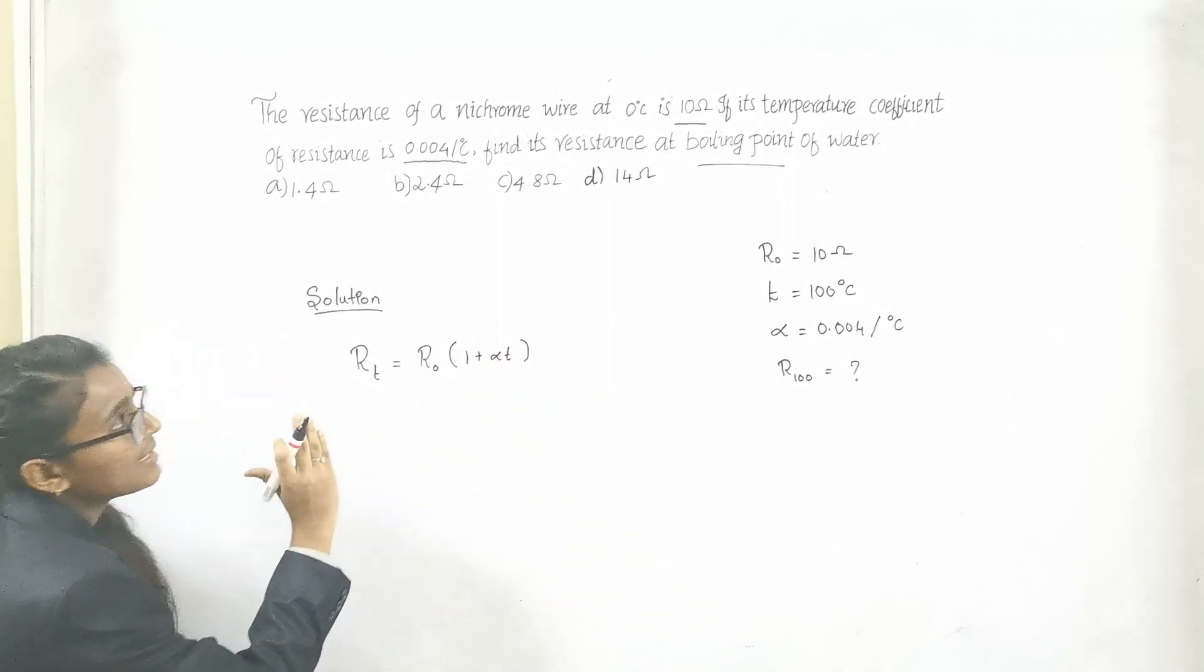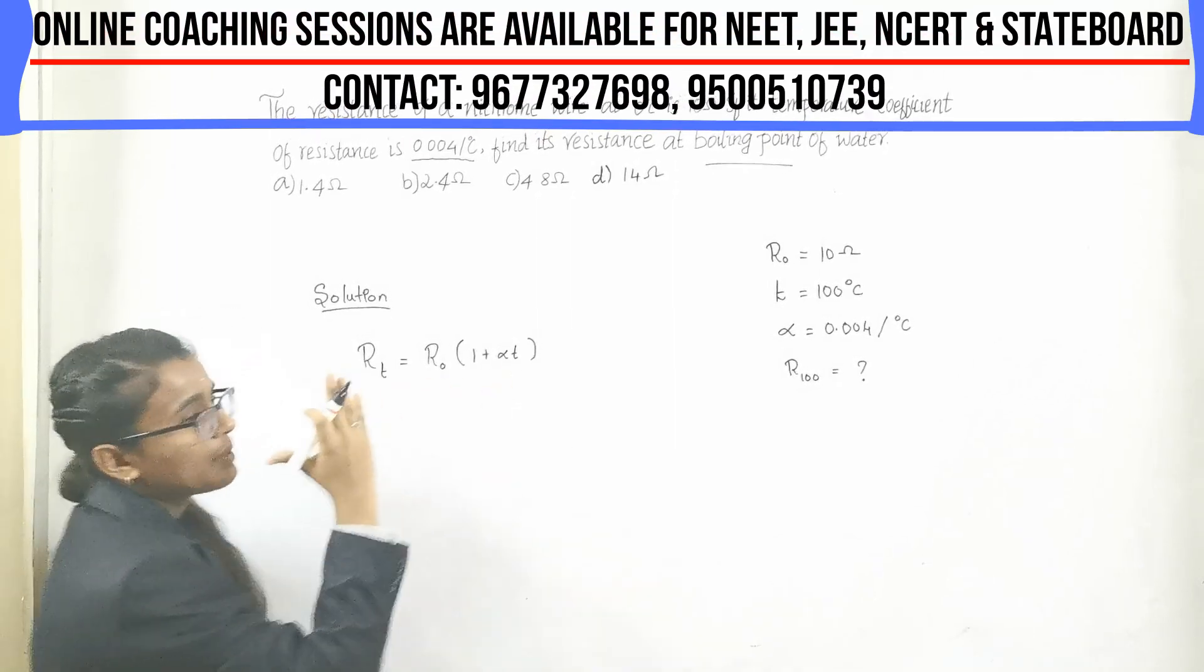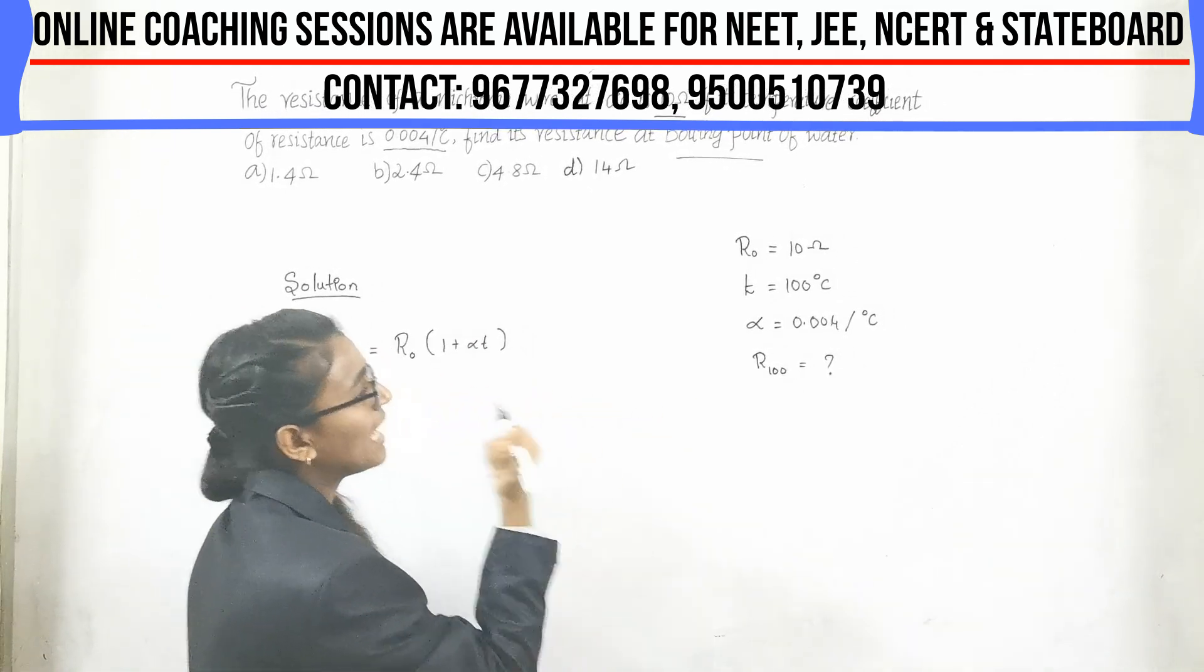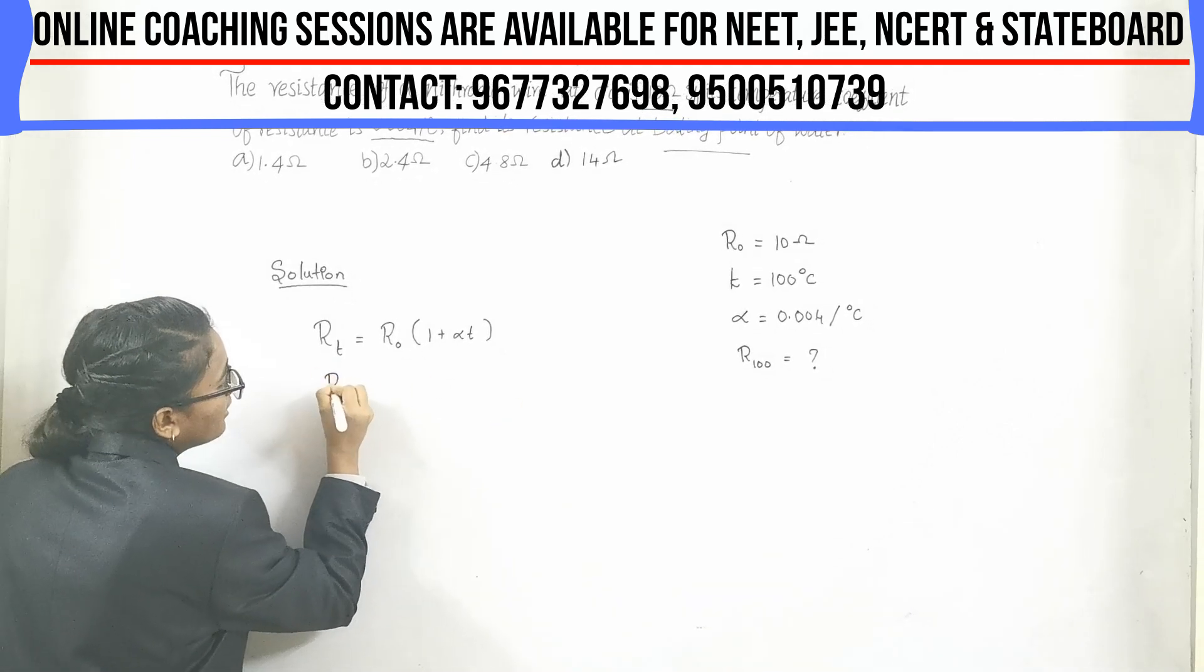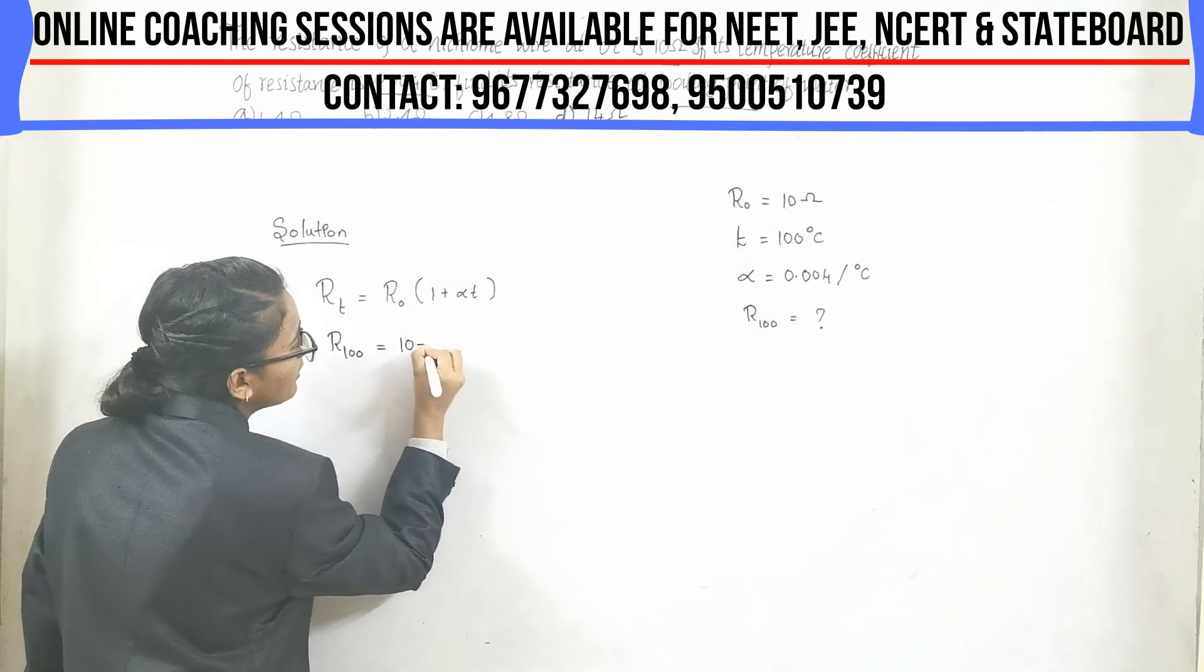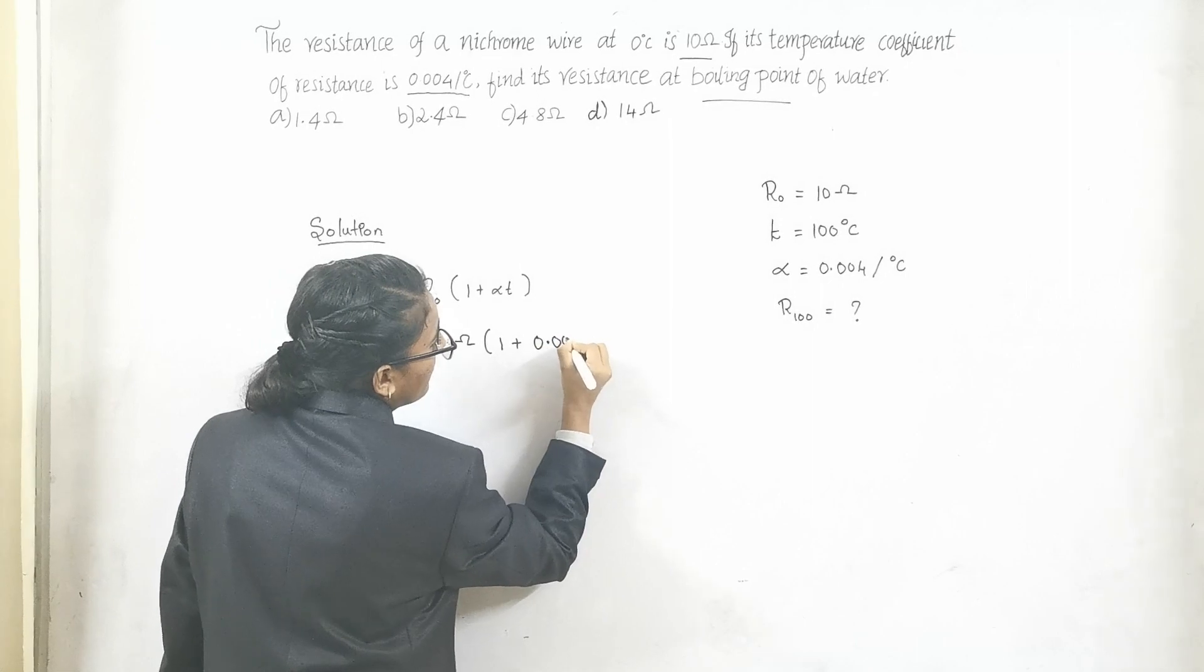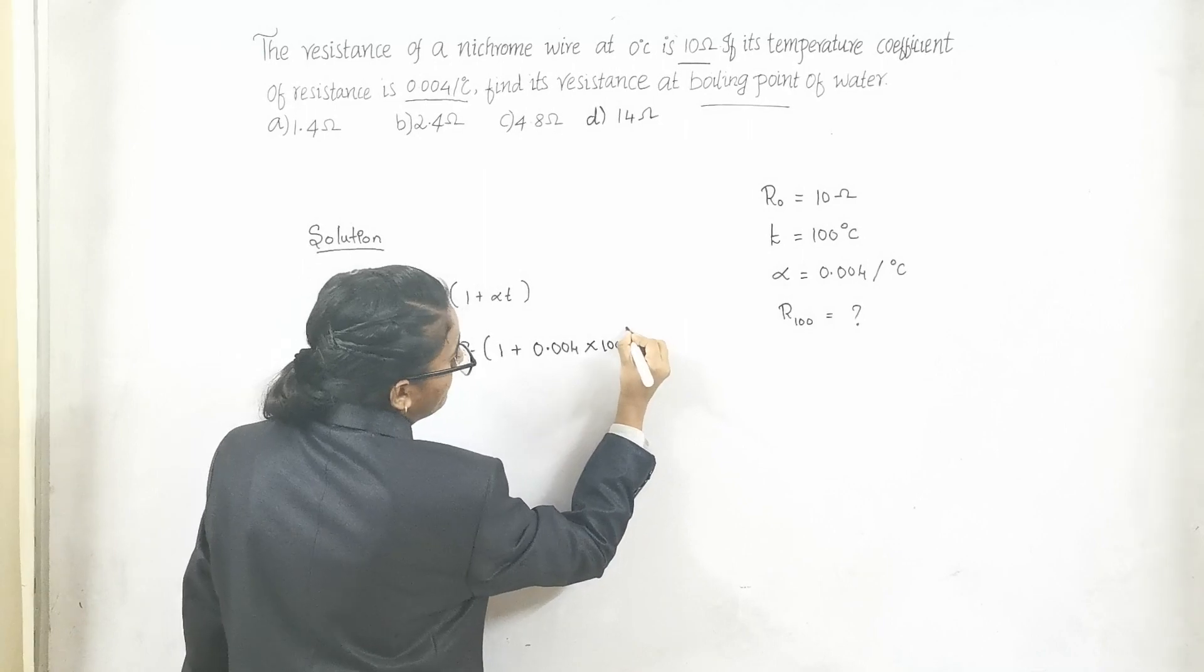R₀ is resistance at 0 degrees, alpha is temperature coefficient of resistance, and T is temperature. Let us substitute the given values in the formula. We have to find RT. R_T equals R₀, we know that is 10 ohms, times 1 plus alpha, it is 0.004, into 100. 100 is our temperature.